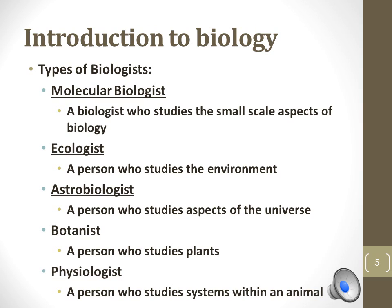There are several types of biologists. This list shows just a few of the many different types of biologists and the fields they study, such as a physiologist who studies systems within an animal, an ecologist or a person that studies the environment, and so on. Can you think of other types of biologists?